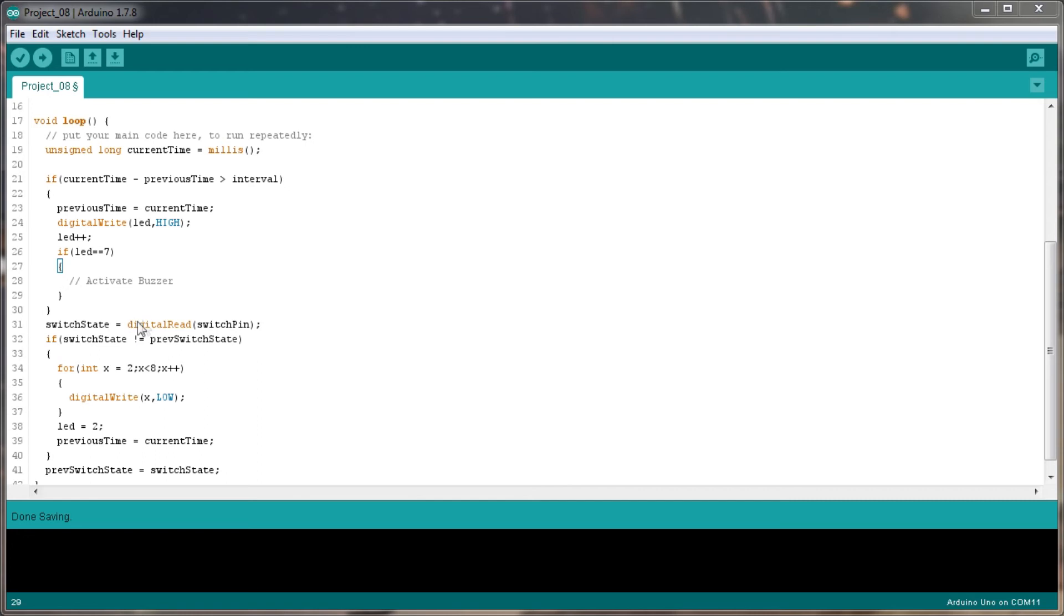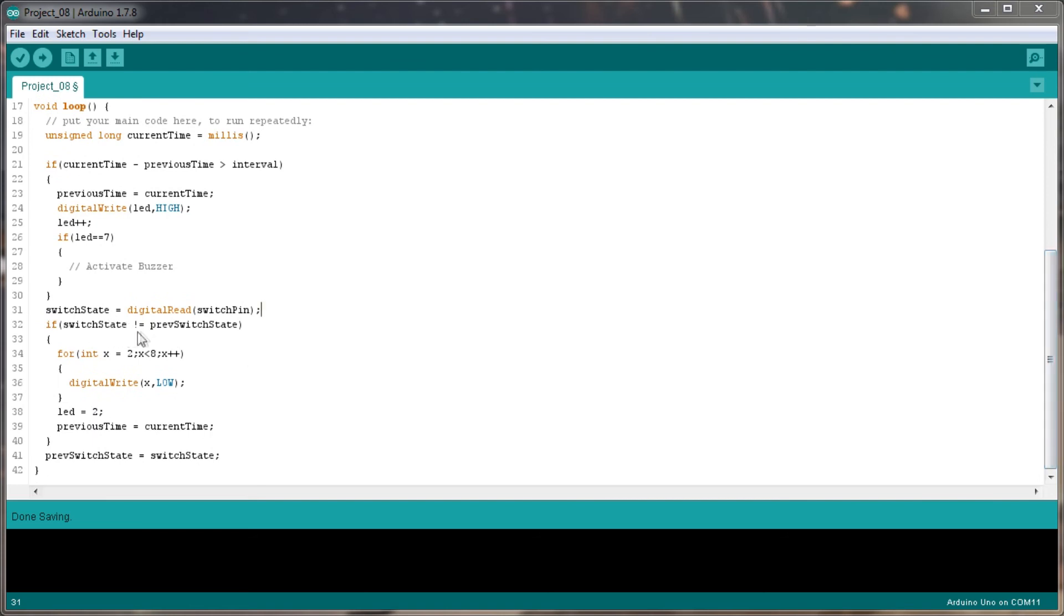Then we're going to set our switch state as part of the loop. We're going to set our switch state equal to the digital read of the switch pin. This whole area is all about saying let's flip over our hourglass. If the switch state is not equal to the previous switch state, we're going to reset, switch all of the LEDs to off, reset the current LED to 2 again, and set the previous time as equal to the current time. Then we're going to set our previous switch state to the actual switch state.